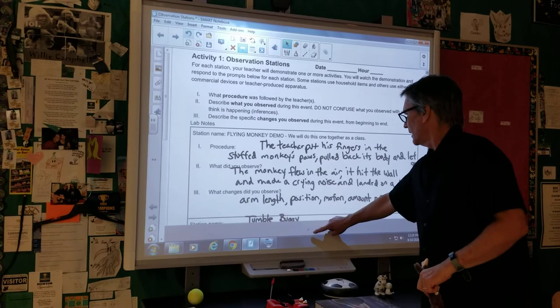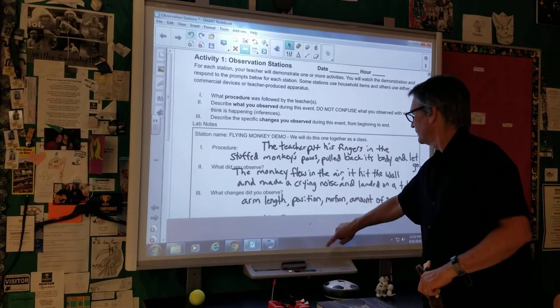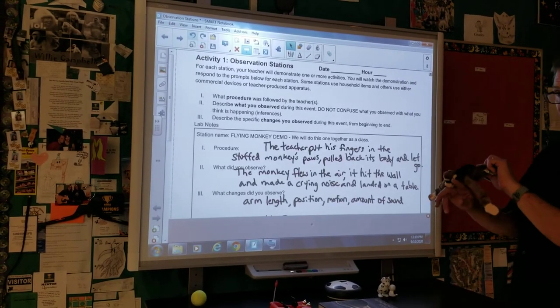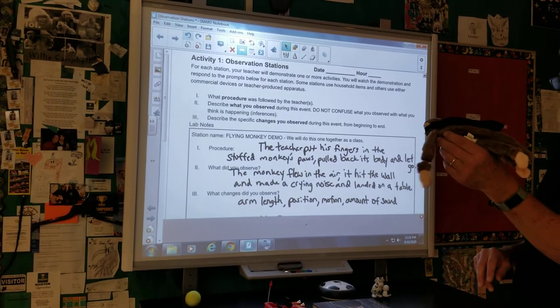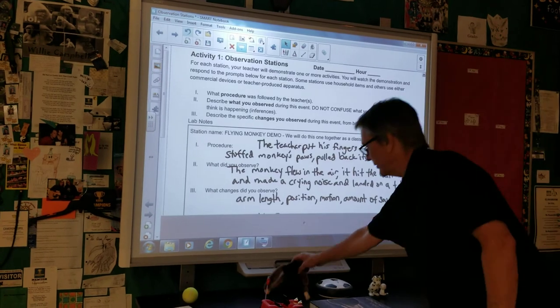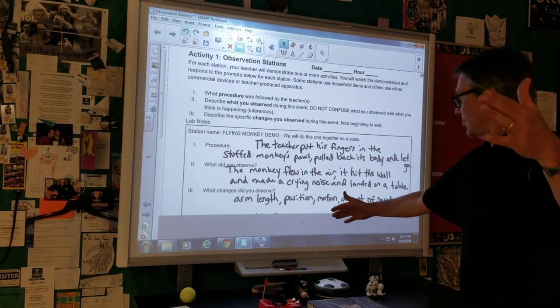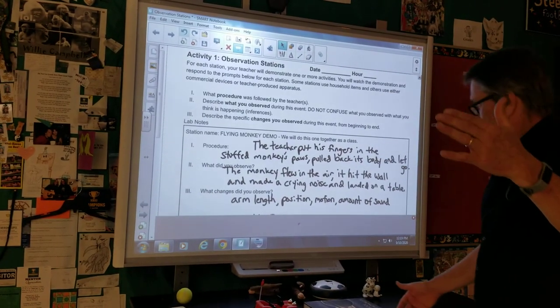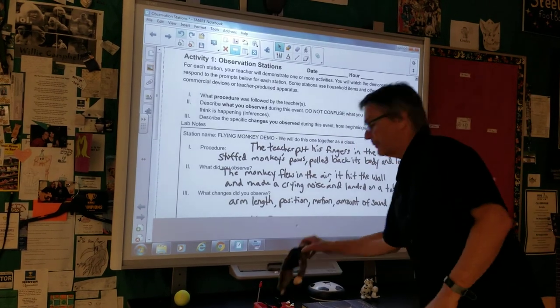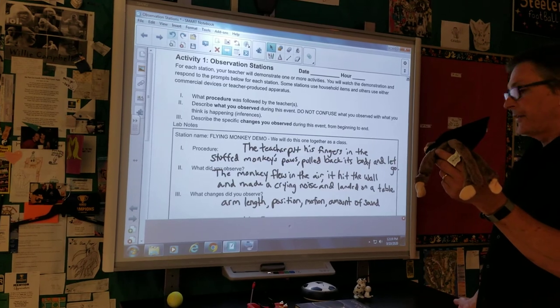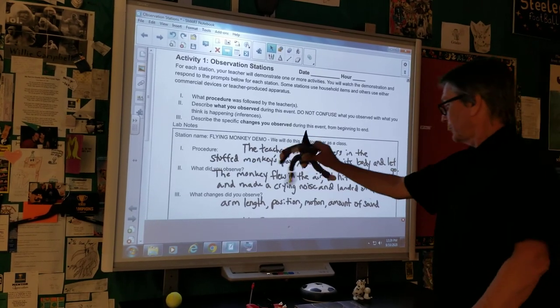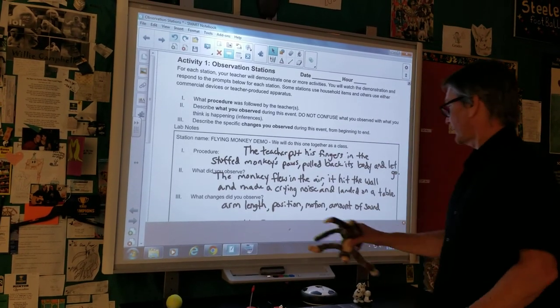The position of the monkey changed. It started at this position, and it ended over here. So, its position changed. The motion of the monkey changed. It started, it was still, and then it flew in the air before it landed and it was still again.